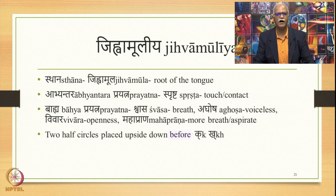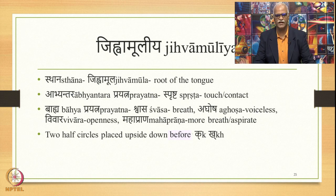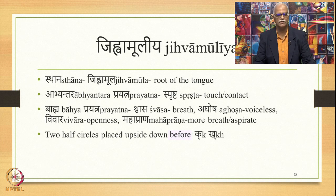Let us now look at Jivvamuliya. As the name suggests, this sound is produced from the Jivvamuliya — the root of the tongue. The Abhyantara Prayatna of this sound is Sprashta. The Bhaiha Prayatna is Aghosha (voiceless), Vivara (openness), and it is Mahaprana — requiring more breath, also an aspirate. Two half circles placed upside down before K and Kh is how this sound is written.